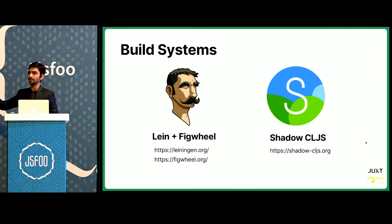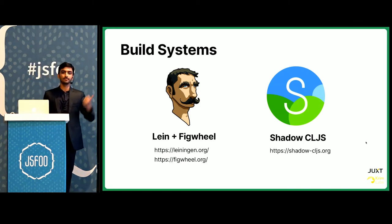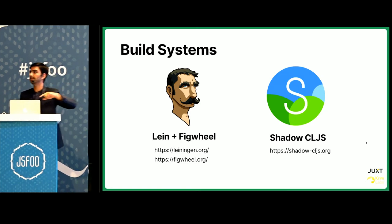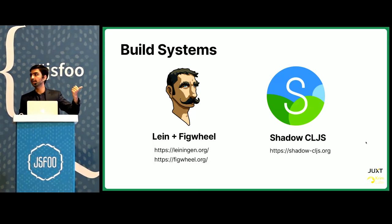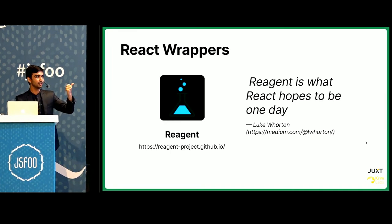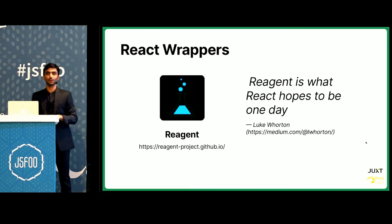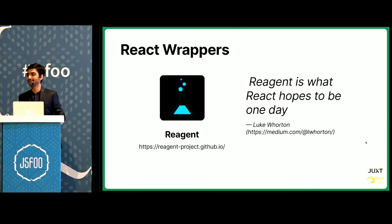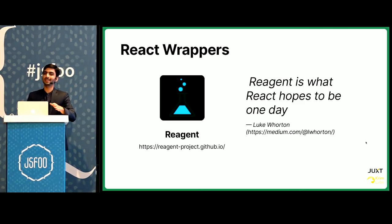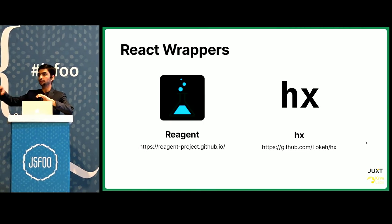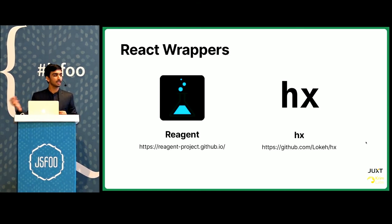There are just two build systems — no competition among libraries. You have Lein and Figwheel, and there is Shadow CLJS. I would prefer Shadow CLJS because it lets you easily interop with the NPM ecosystem — you'll have to do some extra work with Lein and Figwheel. There are multiple React wrappers; one of them is Reagent. Luke Wharton says Reagent is what React aims to be one day. And if you like vanilla React, there's something called HX that lets you use the native JavaScript implementation of React inside ClojureScript.